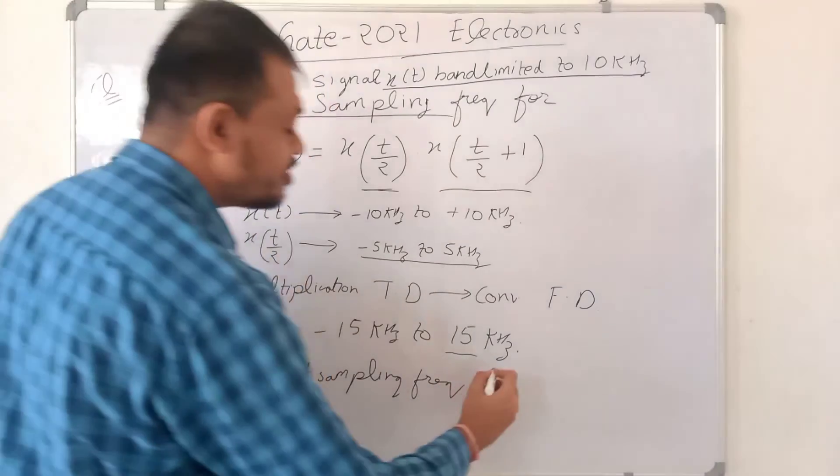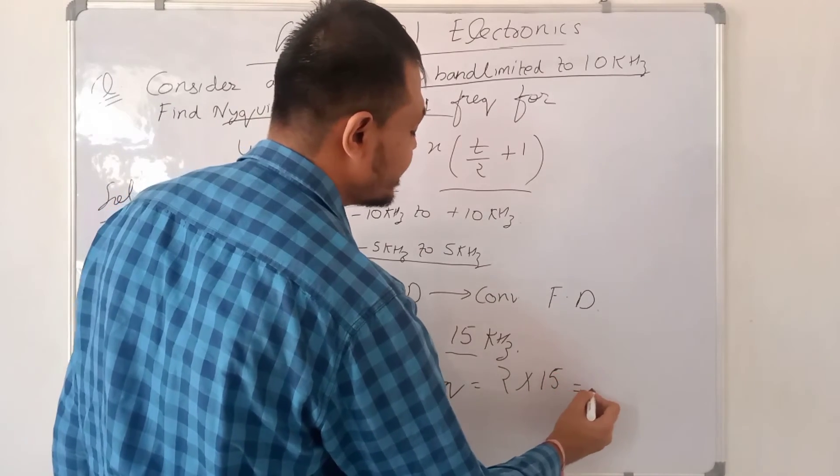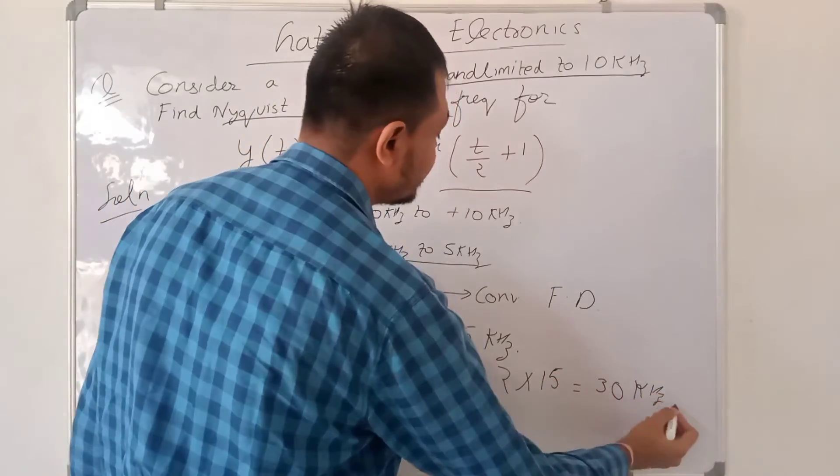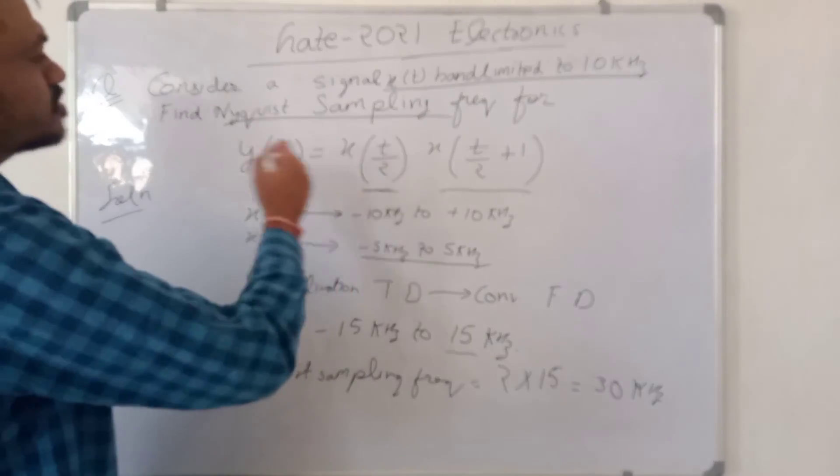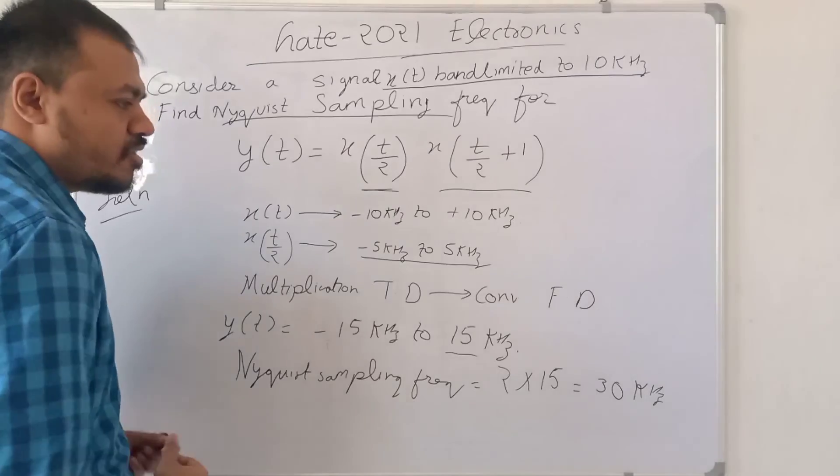So the Nyquist frequency will be 30 kHz. So the correct answer is 30 kHz, and the Nyquist frequency for this Y(t) will be 30 kHz.